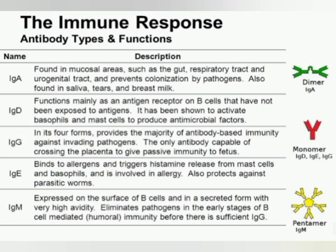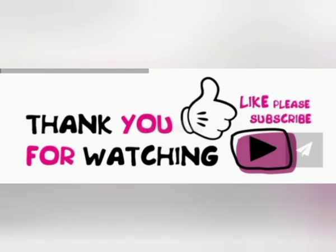Quick review of all immunoglobulins: IgA comprises 10 to 15 percent and is mainly present in colostrum. IgD is found in very small amounts. IgE is found in people with high allergies. IgG is the only immunoglobulin that can cross the human placenta. IgM is the biggest in size and is the first type of antibody made in response to any kind of infection. Hope you all got some ideas related to immunity and immunoglobulins — thank you for watching.